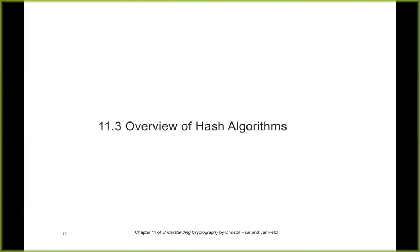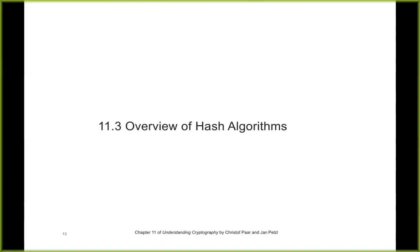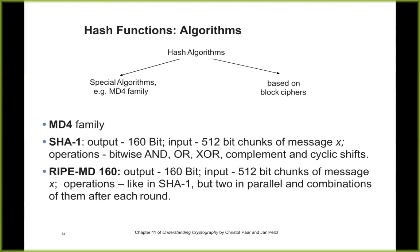There are only two types of hash functions in common use. One is the MD4 family — MD4, MD5, SHA-1, SHA-2, and RIPEMD — which all work approximately the same way. The other option is to use a block cipher's encryption routine to create a hash, though no common product uses that technique. IPsec might use something like it, but it's not widespread.